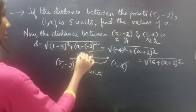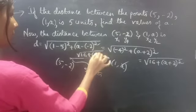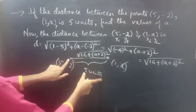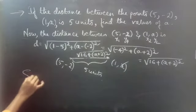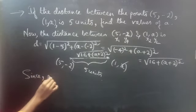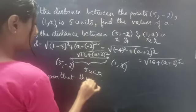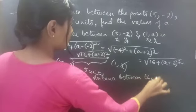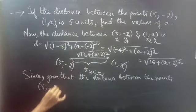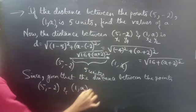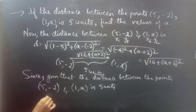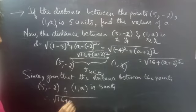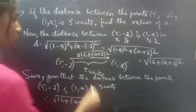We are given that the distance between these points is 5 units. So the distance we got is square root of 16 plus (a plus 2) whole square. And we are given that the distance between these 2 points is 5 units, so these two are equal. Therefore, square root of 16 plus (a plus 2) whole square equals 5 units.